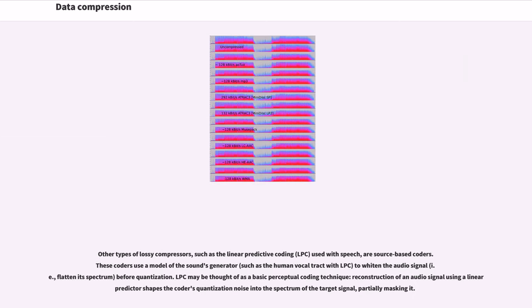Other types of lossy compressors, such as linear predictive coding (LPC) used with speech, are source-based coders. These coders use a model of the sound's generator, such as the human vocal tract with LPC, to whiten the audio signal, i.e., flatten its spectrum, before quantization. LPC may be thought of as a basic perceptual coding technique. Reconstruction of an audio signal using a linear predictor shapes the coder's quantization noise into the spectrum of the target signal, partially masking it.